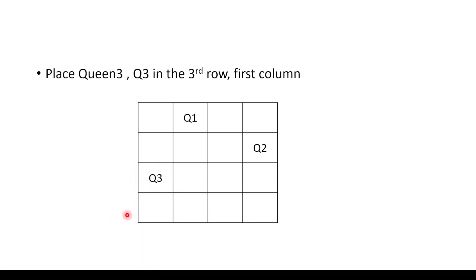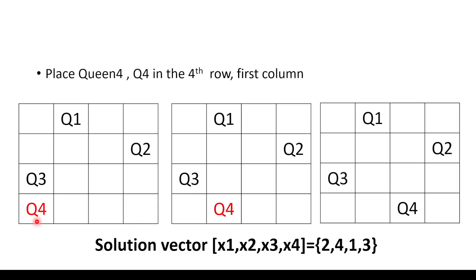Now we check for Q4 in the fourth row. Column 1: Q3 and Q4 are in the same column — invalid. Column 2: Q3 and Q4 are on the same diagonal — invalid. Column 3: it is a valid position for Q4. No two queens share the same row, column, or diagonal. This is a solution to the 4 queens problem.